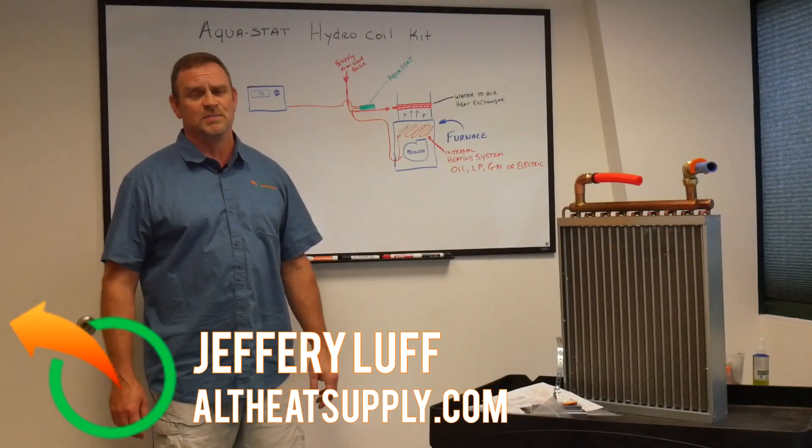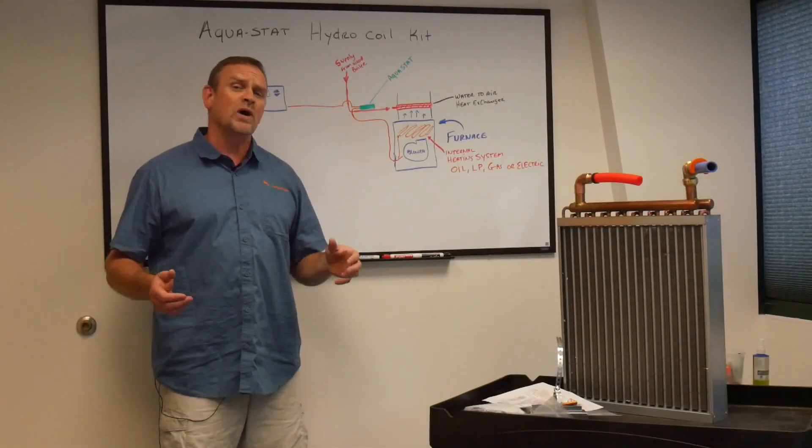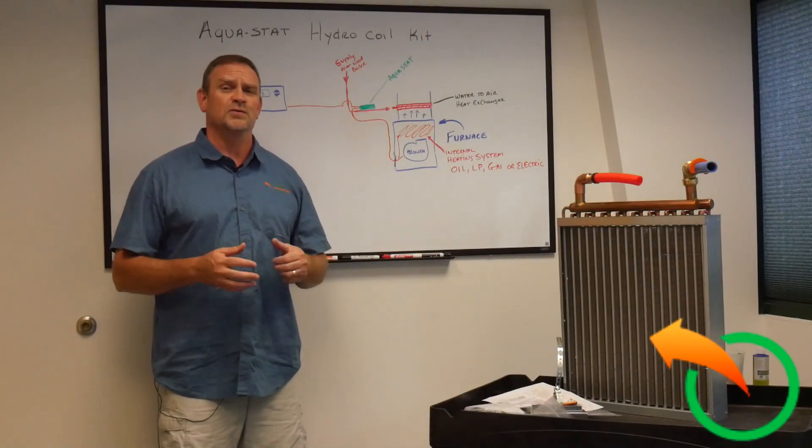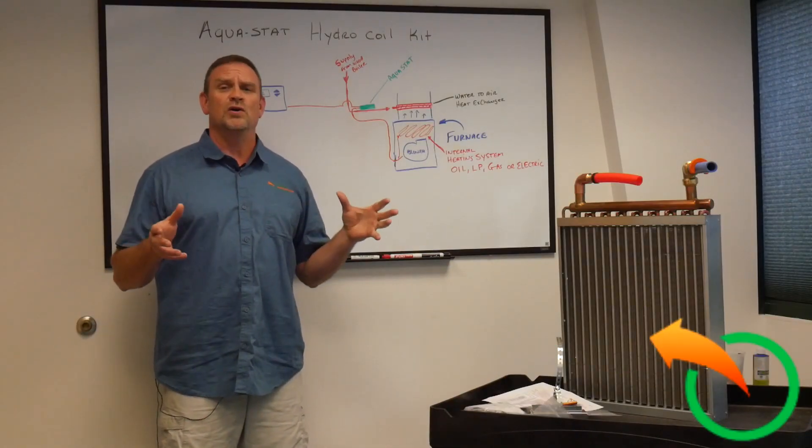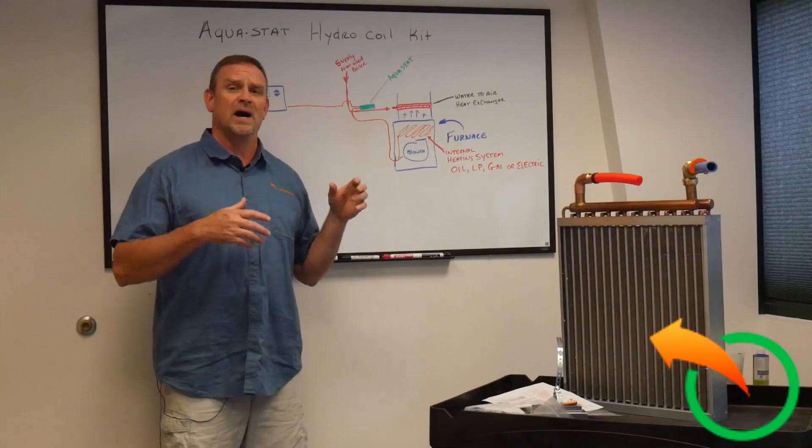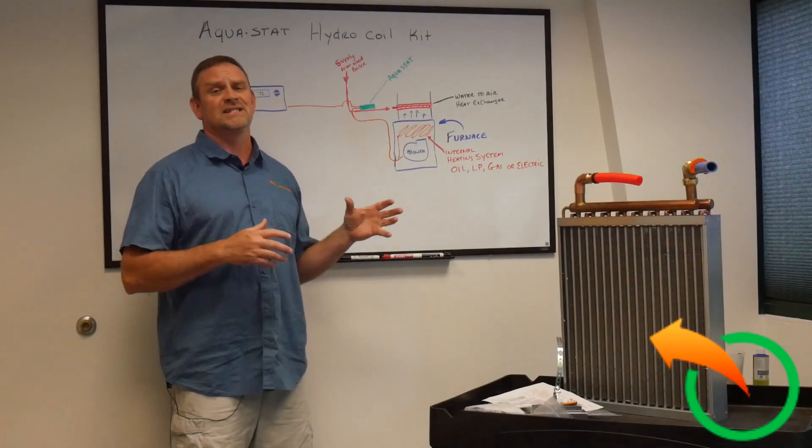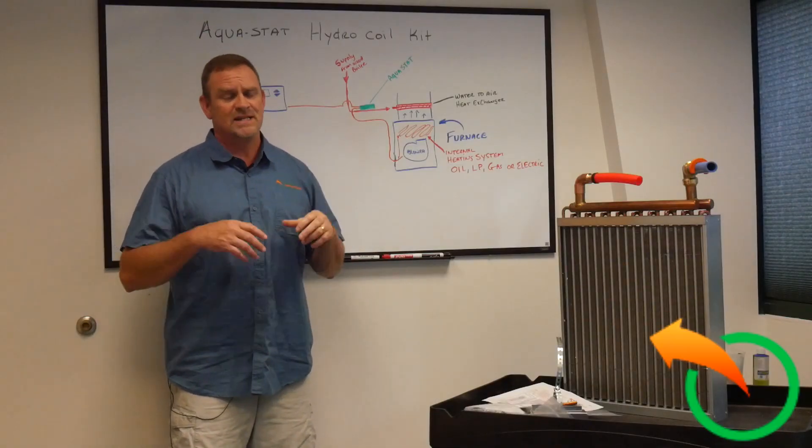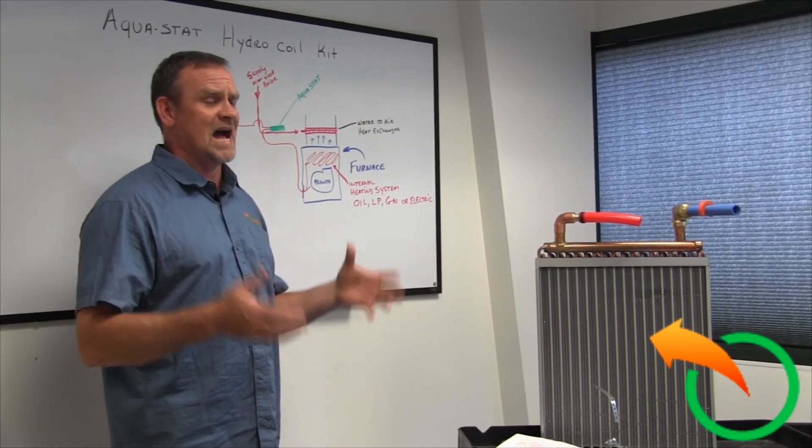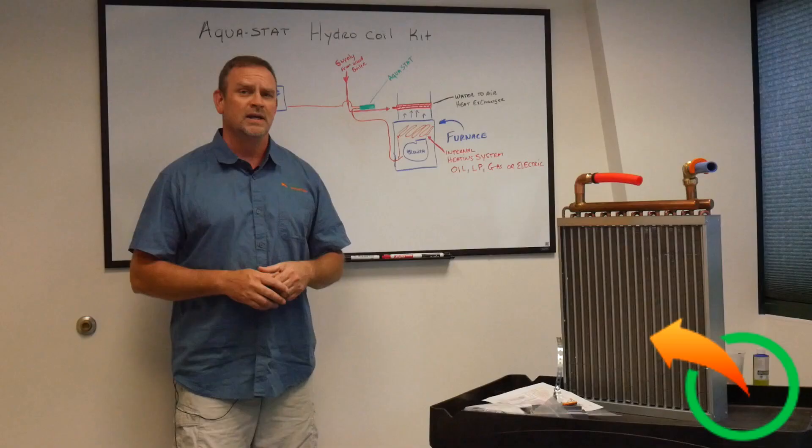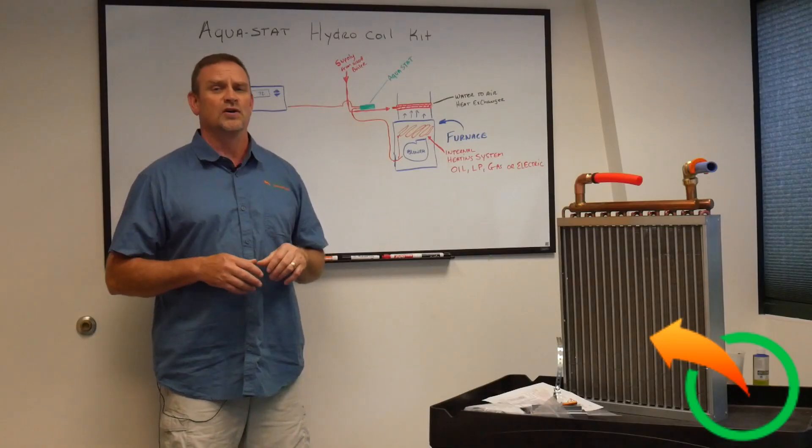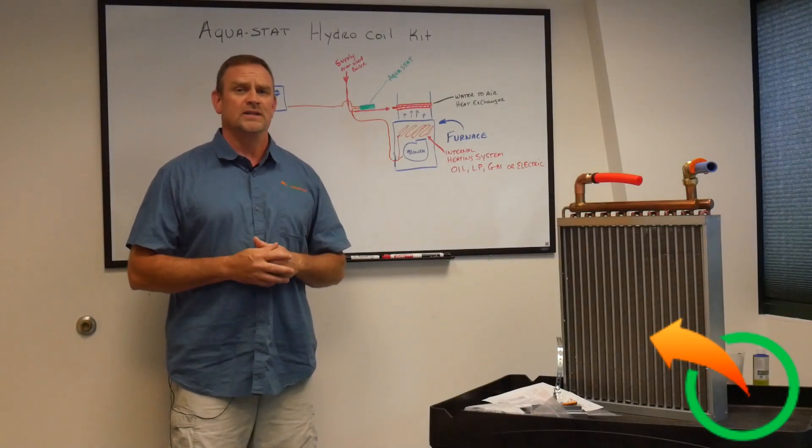Hi, Jeff Luff here from Alternative Heating and Supplies again. I got a question the other day which was good and I decided to do a video on it. It was how do I hook my outdoor wood boiler to my internal inside hot air furnace. It doesn't really matter if we're talking about oil furnace or gas or LP or even electric. They're fundamentally all the same on how to hook them up. So I'm going to go over that quickly in this video.